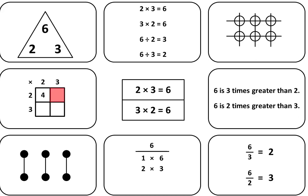Write the product of 2 and 3, which we know is 6. And finally, write the product of 3 times 3. 3 times 3 is equal to 9, so write the number 9. And that completes the first number concept map.